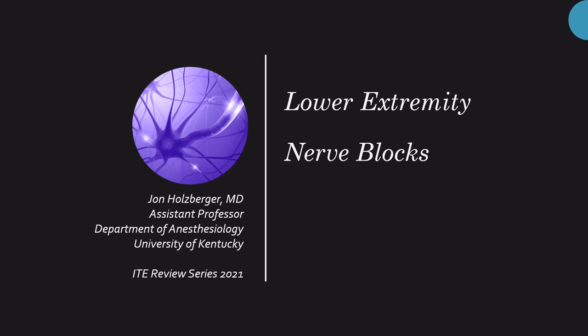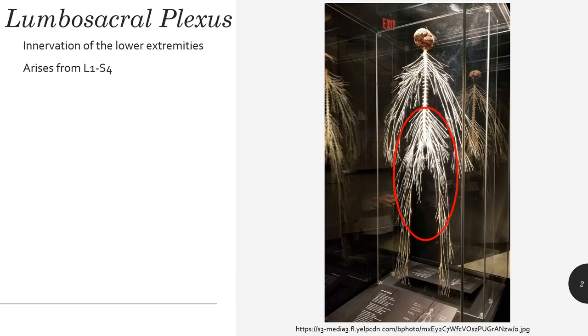Welcome back. This is John Holzberger with Part 2 of the 2021 ITE Review Series Lectures on Peripheral Nerve Blocks. We'll be moving through the lower extremities, again covering some of the highlights and topics that will be important to know for your in-training exam. Yesterday we looked at the motor and sensory innervation of the upper extremities and the brachial plexus, and now today we look at the lower extremities and the lumbosacral plexus.